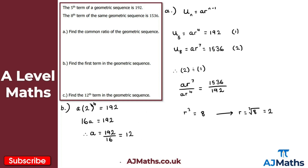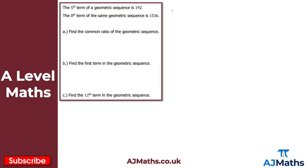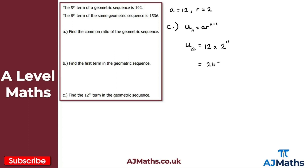The first term is 12. For part c, we find the 12th term. Remembering that a = 12 and r = 2, we use uₙ = arⁿ⁻¹, so u₁₂ = 12 × 2¹¹. Putting this into a calculator gives 24,576. That's the 12th term of the geometric sequence.